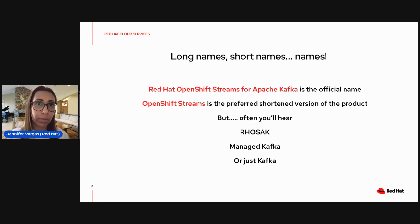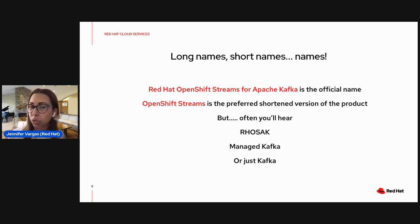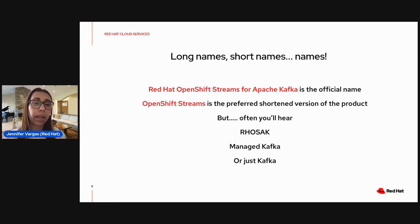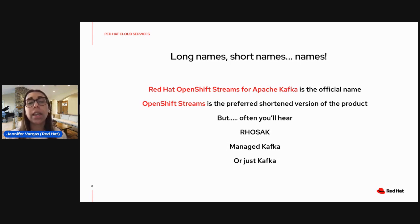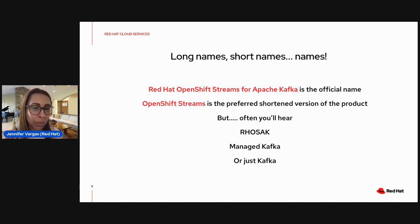You saw that the names of our products are really long, so you're going to hear us shorten some of the names as we talk. Instead of calling it Red Hat OpenShift Streams for Apache Kafka, you will hear us say managed Kafka or just Kafka. In the case of service registry, we will call it the registry or sometimes service registry. We're just trying to make it easier when talking about these services.